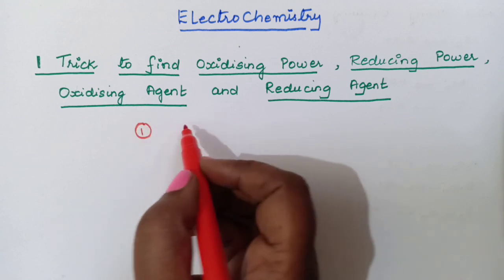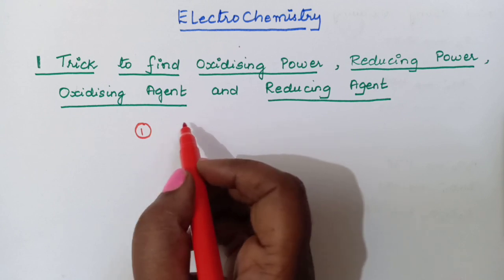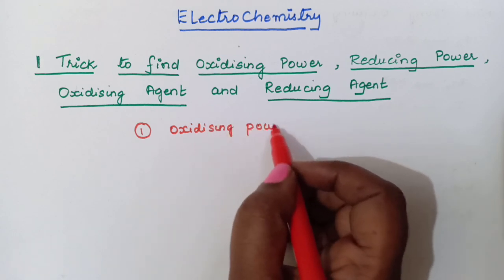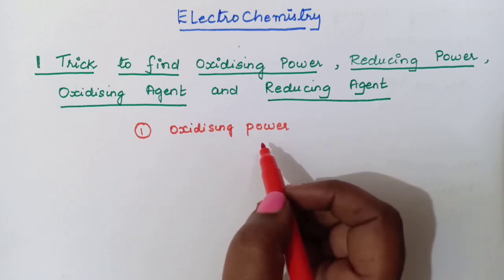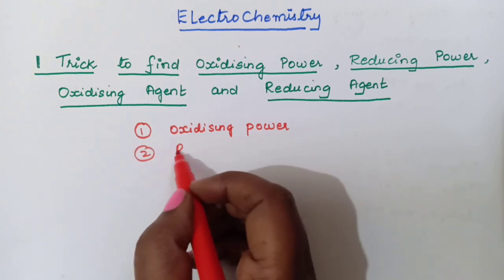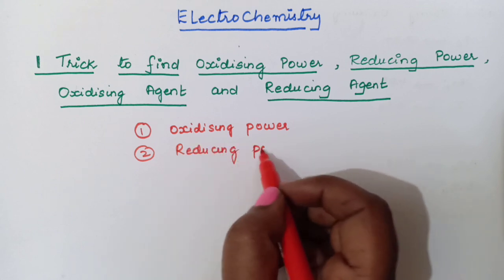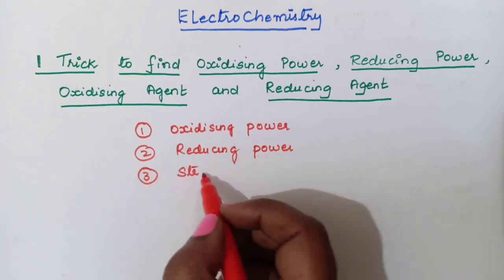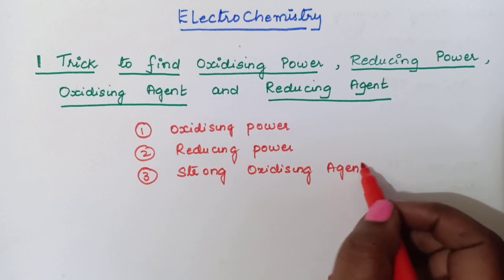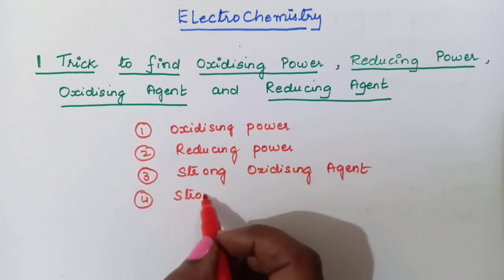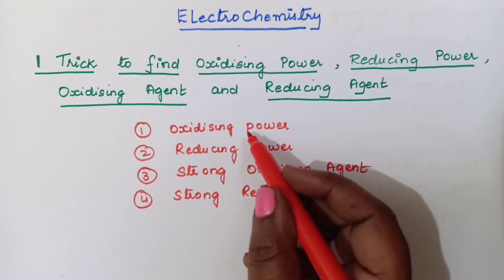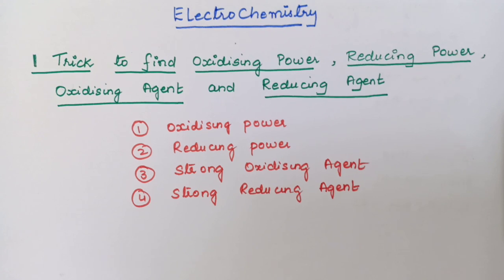The first type of question which will come is: find which is having strong oxidizing power. They can ask about oxidizing power — some four metals will be given and you have to find the increasing order or decreasing order. Second, they can ask reducing power. Third, they can ask find which is strong oxidizing agent. And fourth is strong reducing agent. These four types of questions will appear in NEET examination as well as JEE examination.